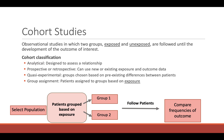If we review the cohort classification: these studies are analytical because they are designed to assess a relationship. Cohort studies can be prospective or retrospective, so we can use new or existing exposure and outcome data. Like case controls, these are quasi-experimental because groups are chosen based on pre-existing differences between patients.